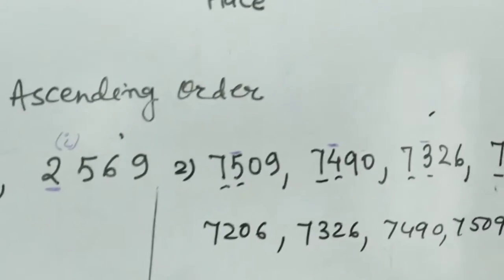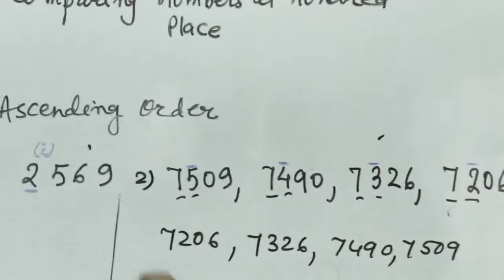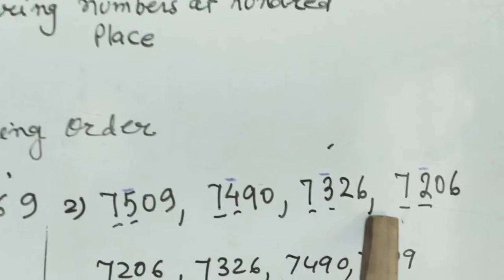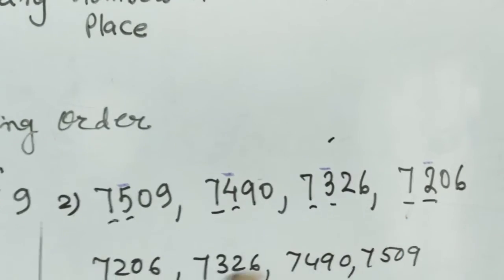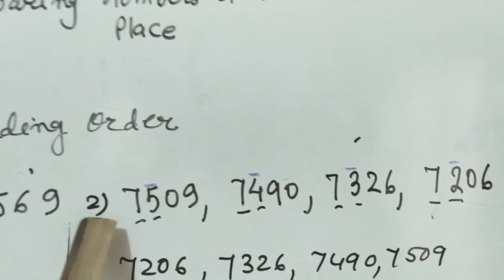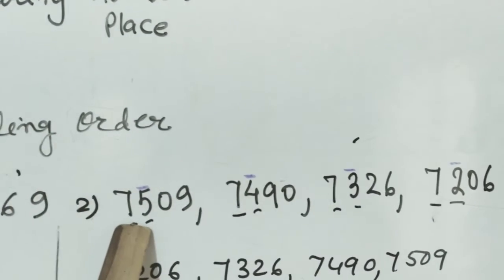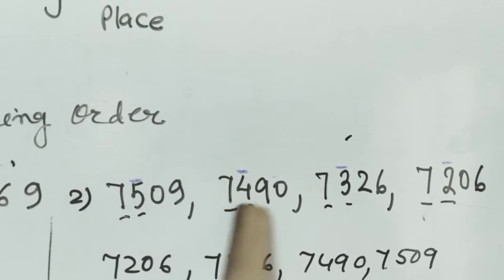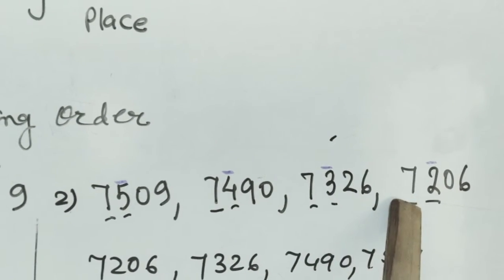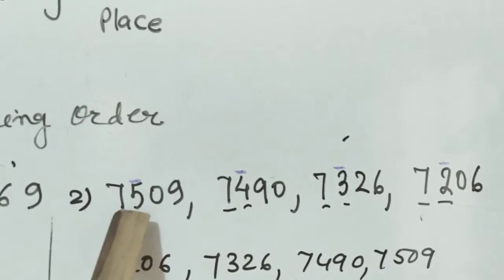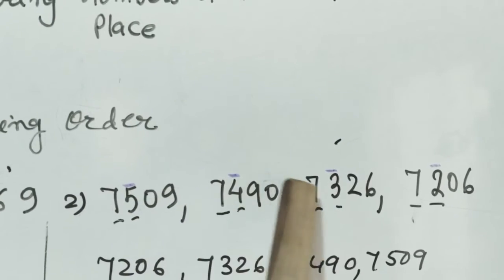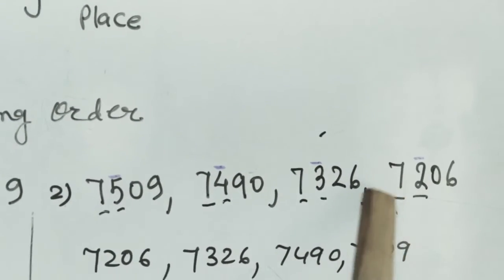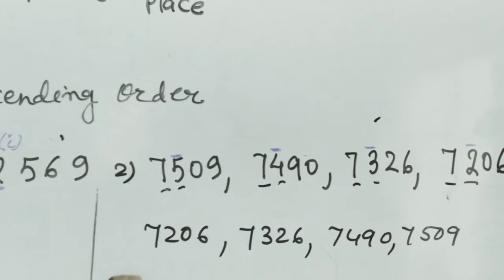In question number 2, we can see at the 1000 place, in all the cases, it is 7. So what we are doing? We are comparing the numbers at the 100 place then. Here it is 5, here it is 4, here it is 3, here it is 2. We know 5 is greater than 4, 4 is greater than 3, and 3 is greater than 2, and we arrange it accordingly.